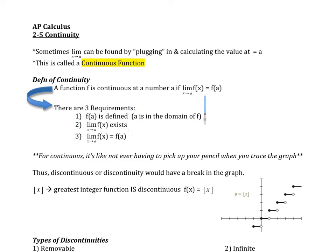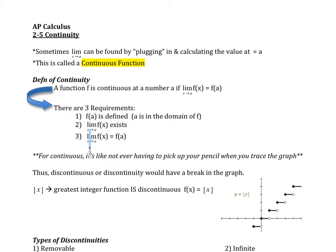Which means there are three requirements for this to happen. First, f(a) is defined — it's in the domain and it exists. Second, the limit as x approaches a of f(x) exists as well. And third, the limit has to equal the f(a) value. That's the definition of continuity — those are the three requirements.